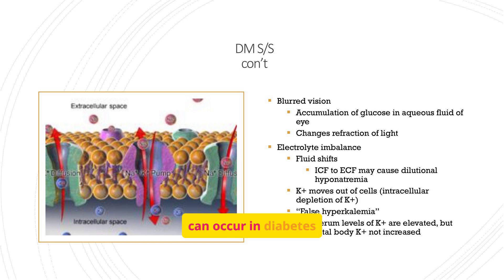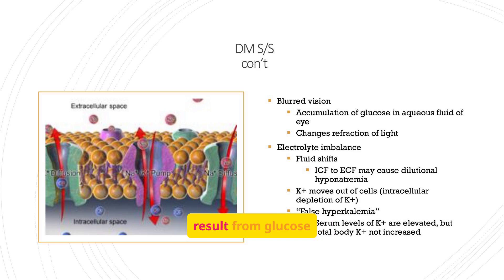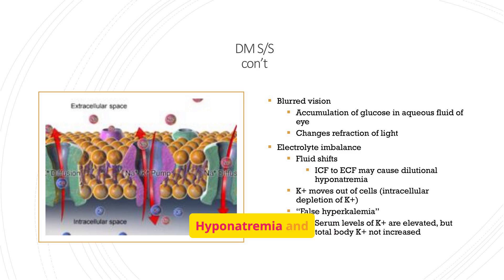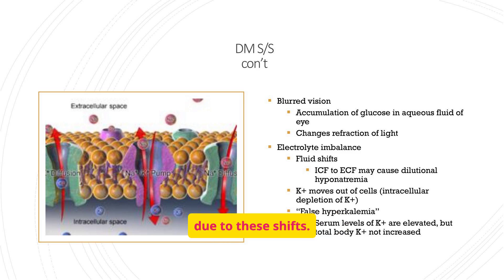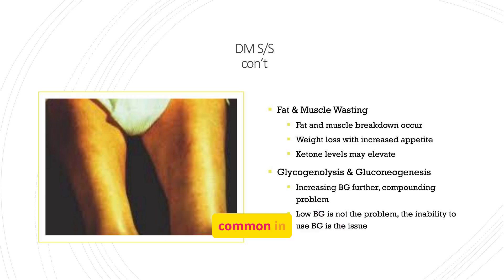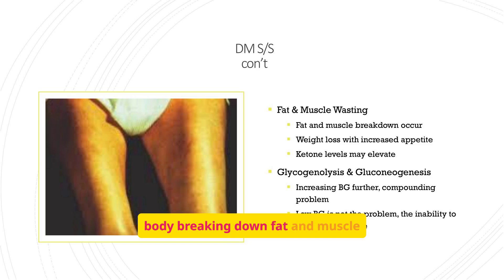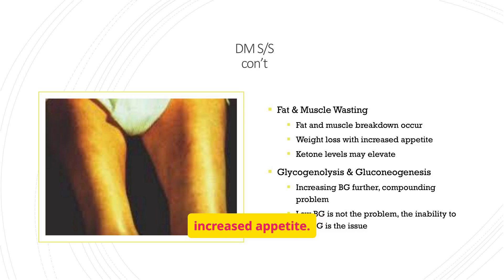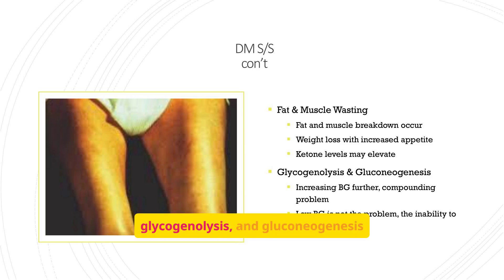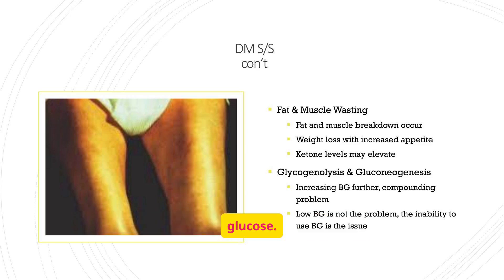Electrolyte imbalances can occur in diabetes due to fluid shifts. Blurred vision can result from glucose accumulation in the lens. Hyponatremia and false hyperkalemia can also occur due to these shifts. Fat and muscle wasting are common in diabetes, as the body breaks down fat and muscle for energy, leading to weight loss despite increased appetite. Elevated ketone levels, glycogenolysis, and gluconeogenesis further increase blood glucose.